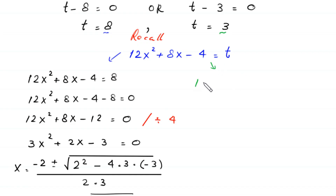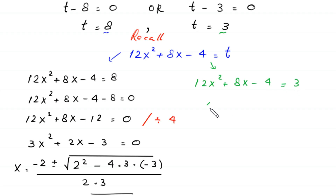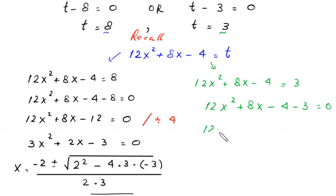Moving 3 to the left hand side: 12x² + 8x - 4 - 3 = 0, which simplifies to 12x² + 8x - 7 = 0.